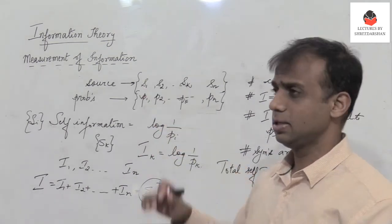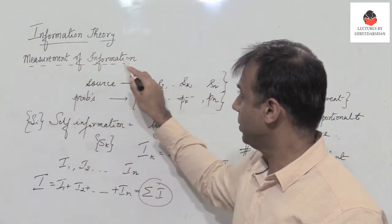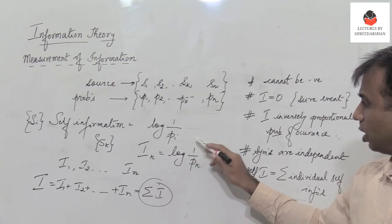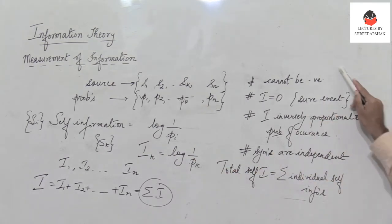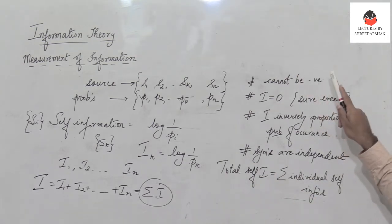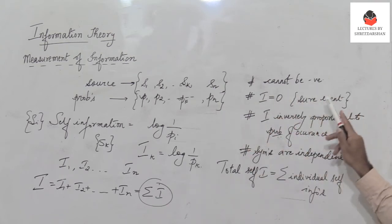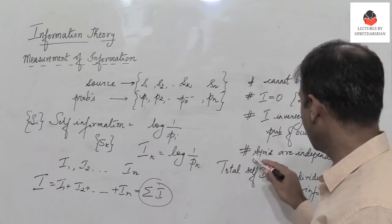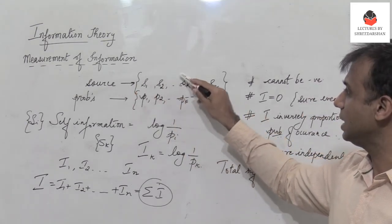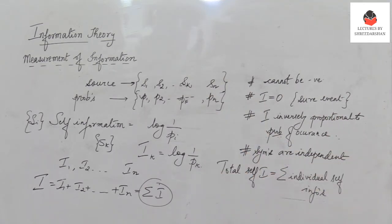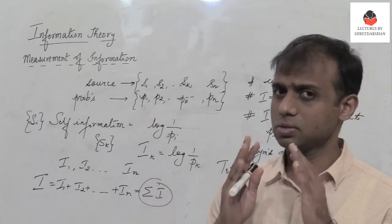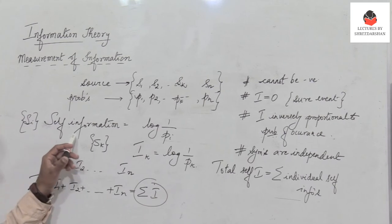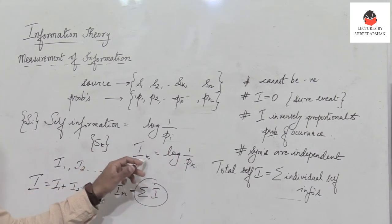In this video segment on information theory, we learned what information is, how to measure it, and what self-information is — given by log(1/p_k). We covered four key properties: information cannot be negative; a sure event has zero self-information; self-information is inversely proportional to probability of occurrence; and for independent symbols, total self-information is the sum of all individual self-informations.